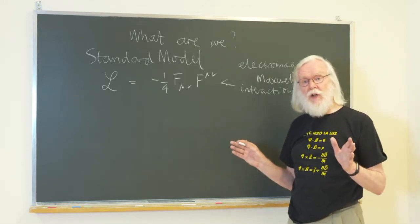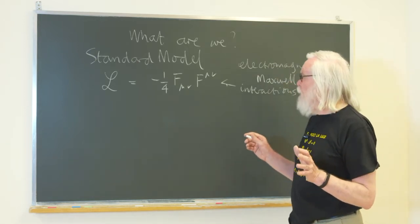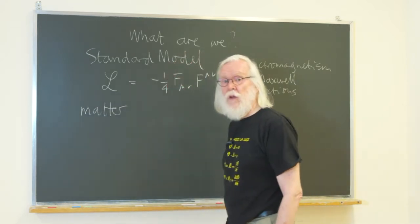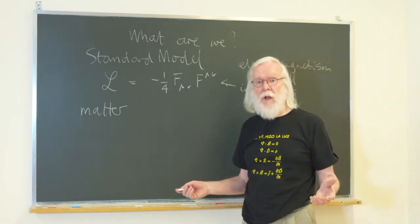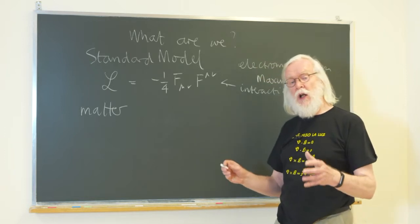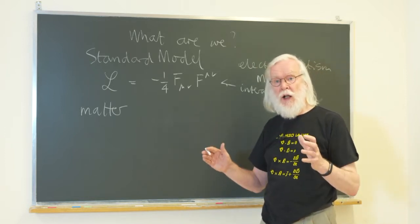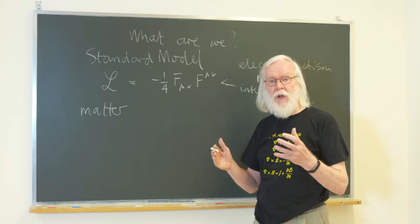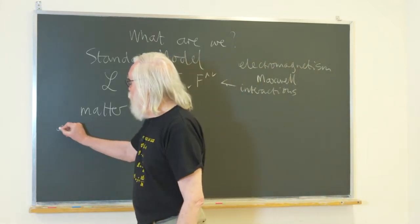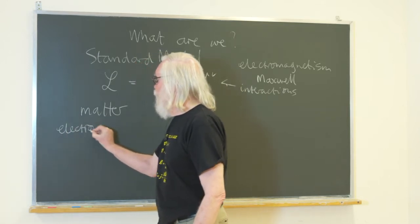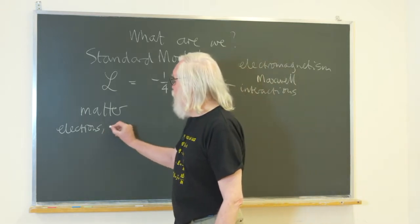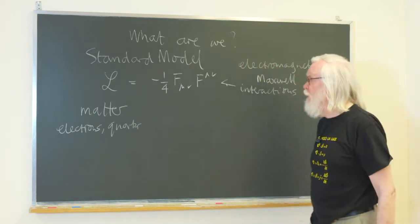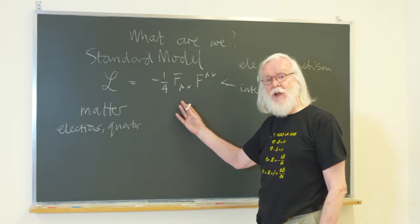In addition to the fundamental interactions, the standard model also includes a description of the particles of matter that fill the universe. Some of these we're quite familiar with: electrons, which exist in clouds around nuclei. Inside those nuclei there are particles called protons and neutrons, and inside those protons and neutrons are things that we call quarks. When we're thinking about the fundamental particles of matter, we think about electrons, quarks, and their various relatives. What is the term in the equation that describes them?